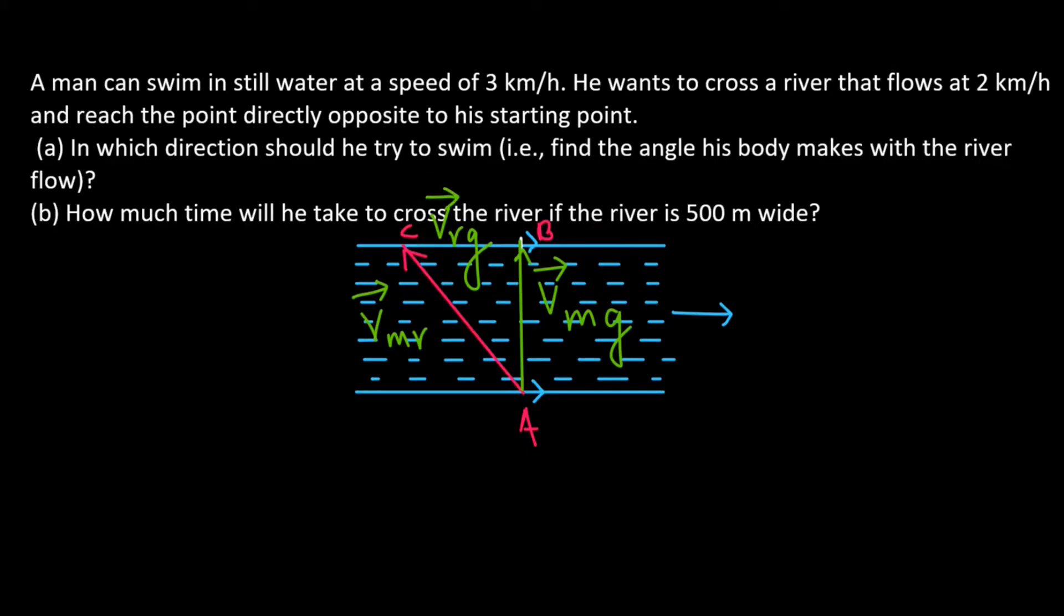Let me write the known values. And to find the direction, say that this angle is equal to theta. And we know that this is equal to 90 degrees. So, direction of flow of the river is like this.